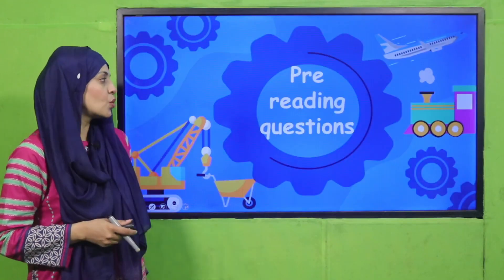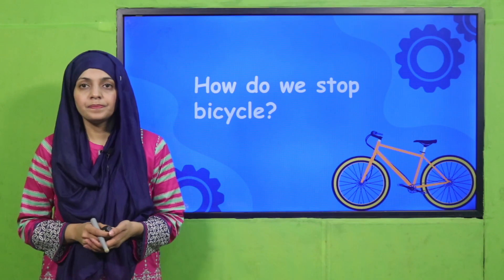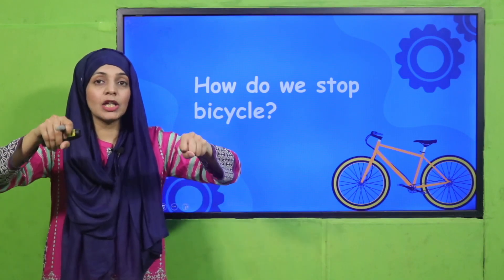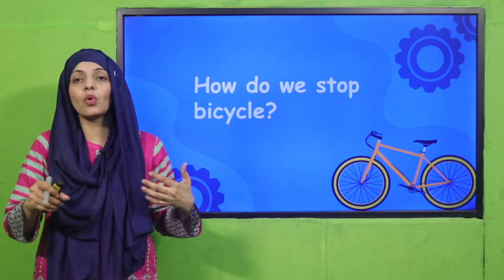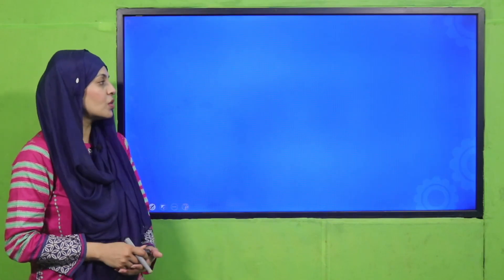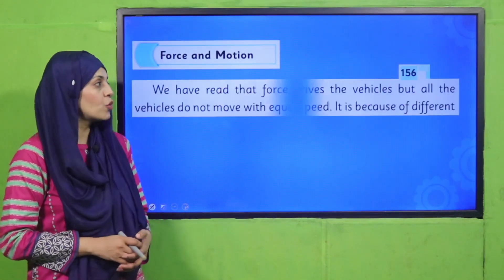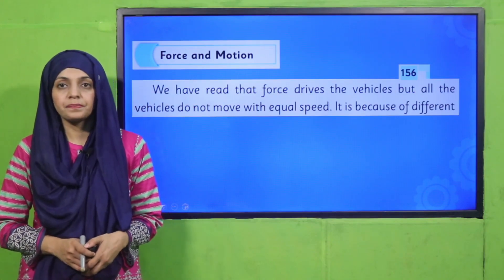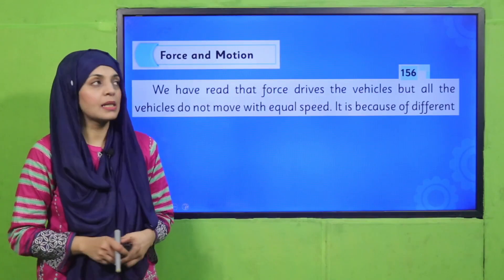My dear students, the pre-reading question is: How do we stop a bicycle? By applying the brakes given on the handle. When you press the brakes on the handle, the bike stops. Okay, my dear students, now is the time for reading. Please open page number 156 in your GK3 book. I hope everybody has opened the page, so now let's start the reading.